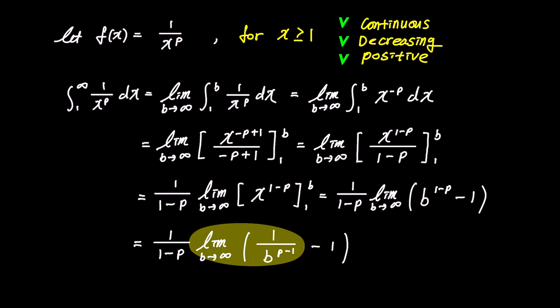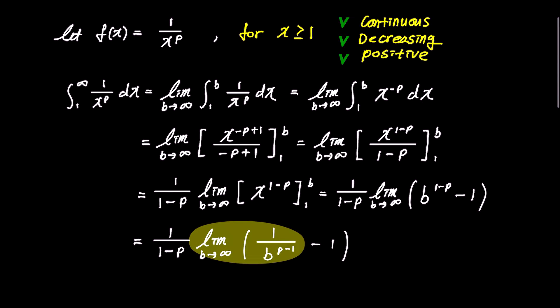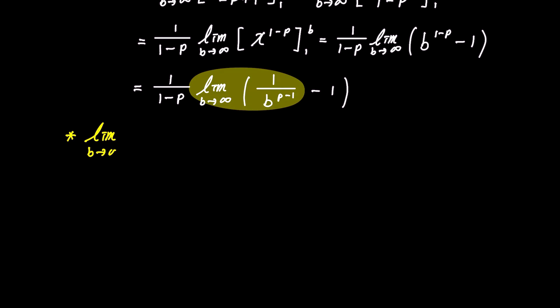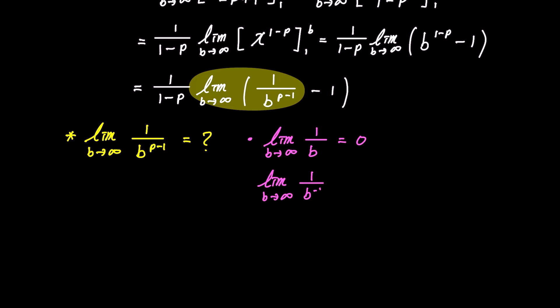Now let's examine the expression more closely to determine its convergence and divergence condition. What would be the limit of 1 over b to the power of p minus 1 as b approaches infinity? Let's consider an example: the limit of 1 over b as b approaches infinity is 0. But the limit of 1 over b to the power of negative 1, as b approaches infinity, becomes the limit of b, which tends to infinity. When the exponent of b in the denominator is positive, it converges to 0; when the exponent is negative, it diverges to infinity.